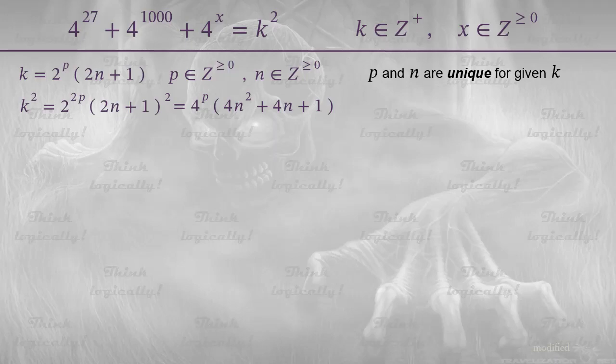Let's see what we can do for the left-hand side of the equation. In order to make it matching the expression for k squared, we need to factor out a power of 4. However, we can't do it straight away, because we don't know which term is the lowest one. This suggests that we have to consider two cases. When x does not exceed 27, and when x is greater than 27.